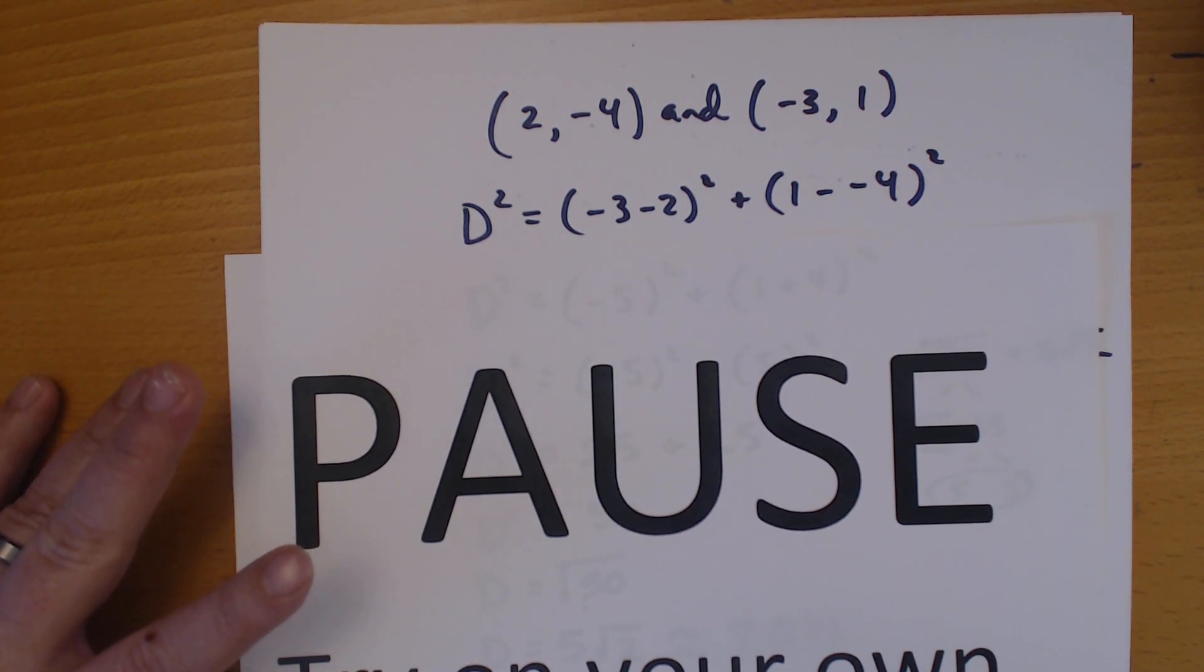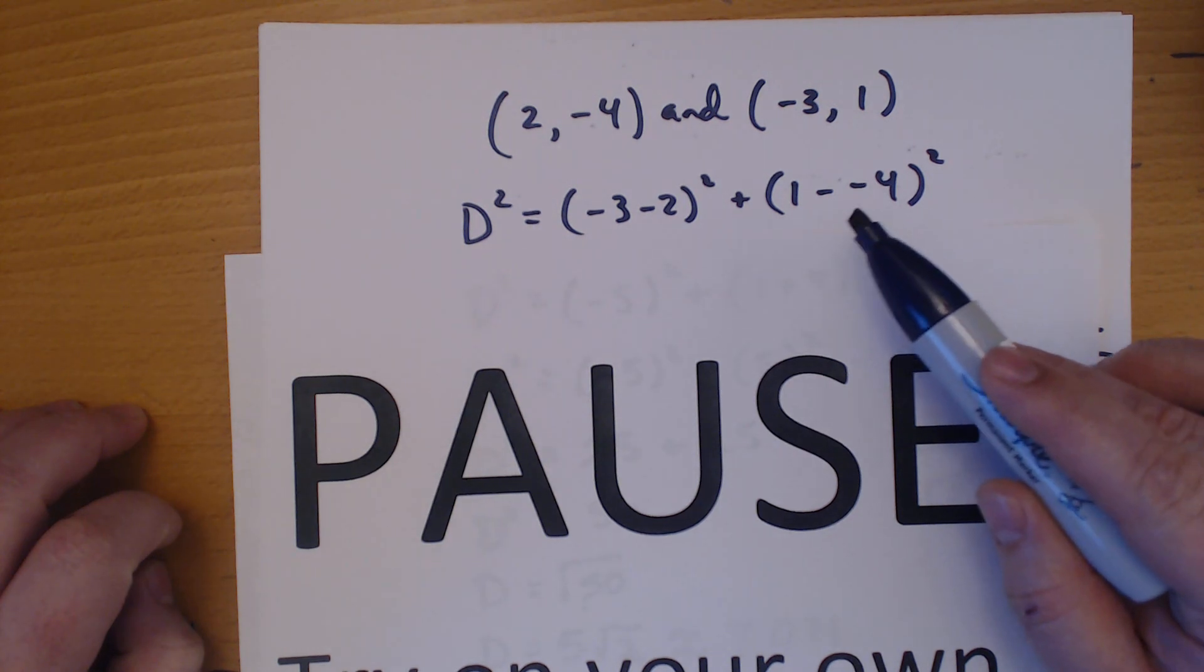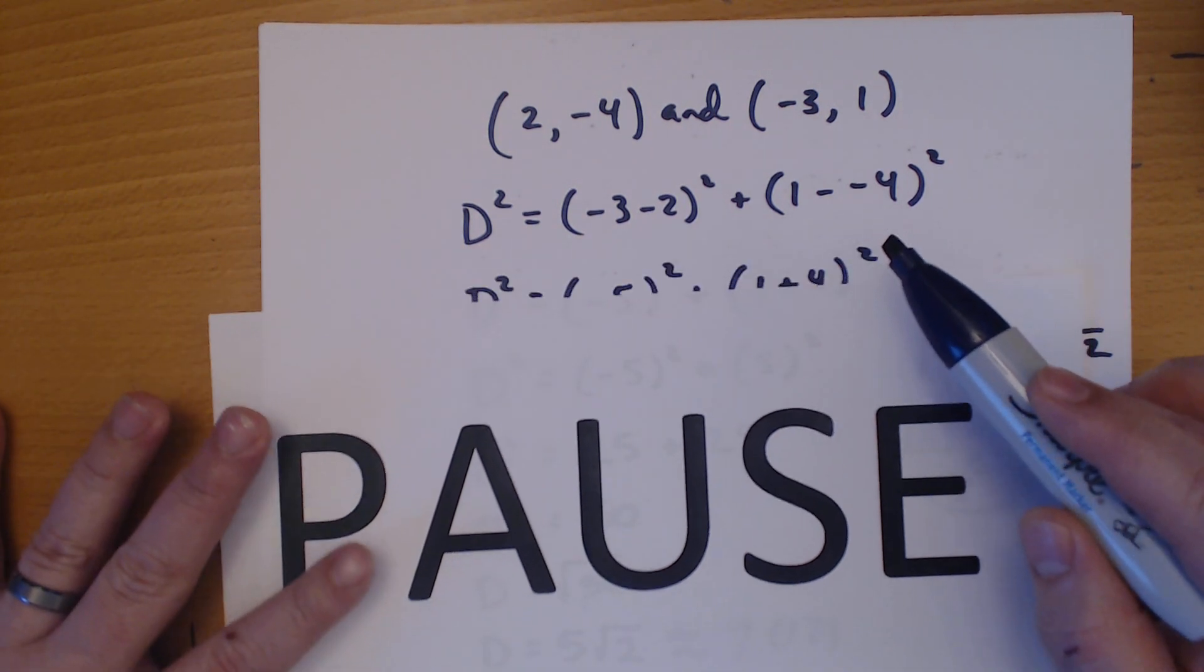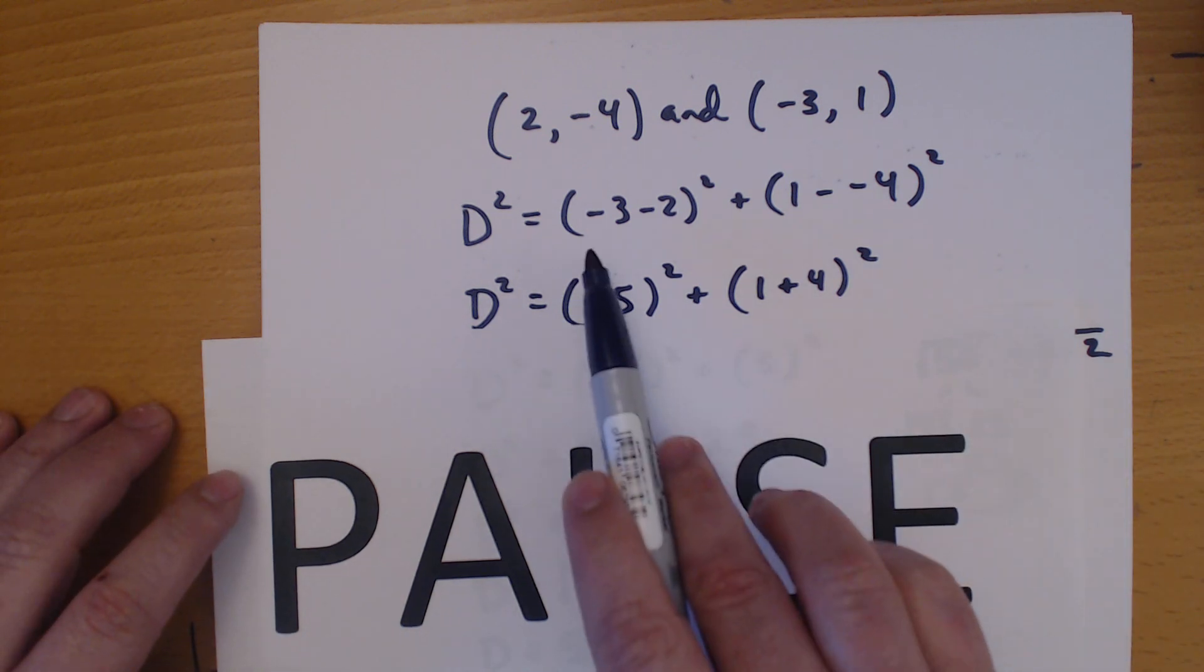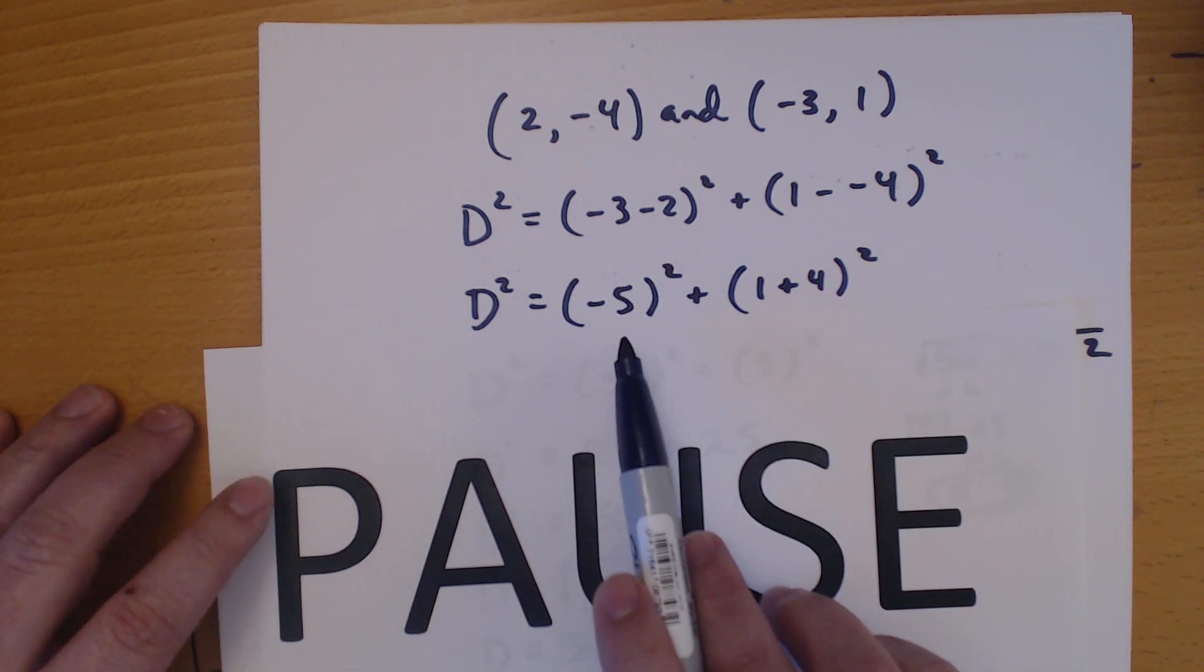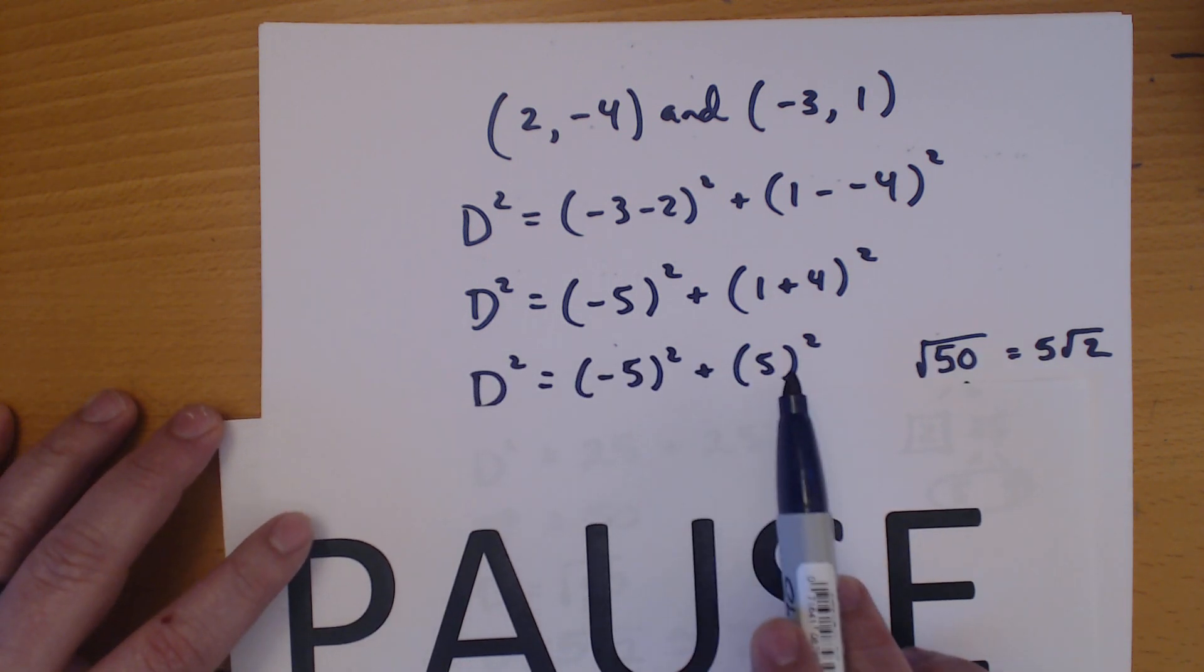And remember, we want to keep everything in parentheses. So, 1 minus a negative 4, and a negative and a negative make a positive. Negative 3 minus 2 is negative 5. I simplify the 1 and the 4.